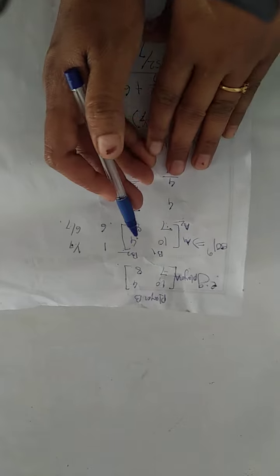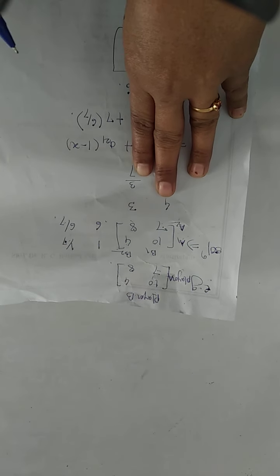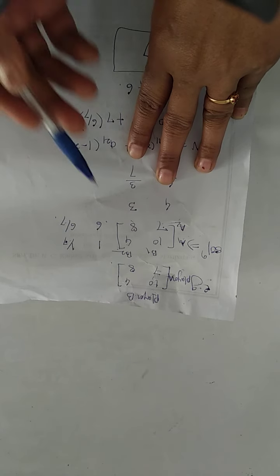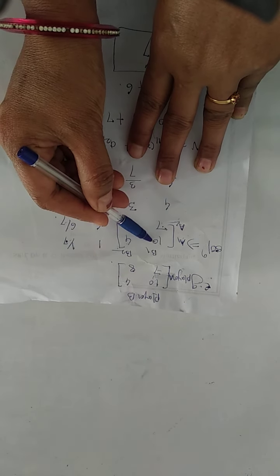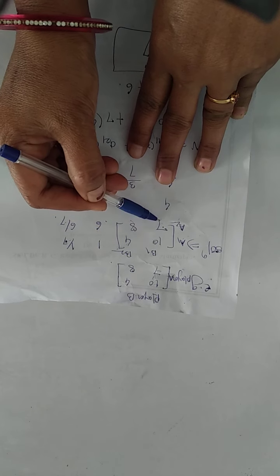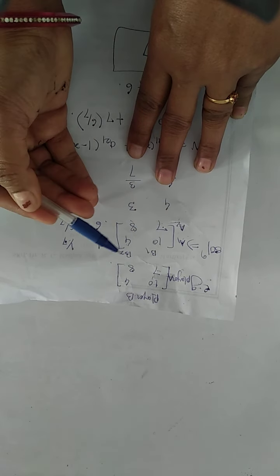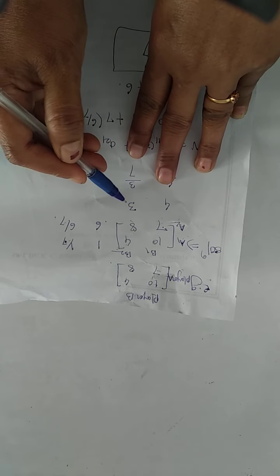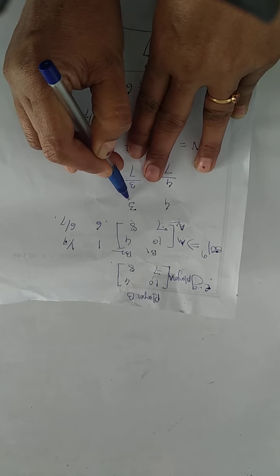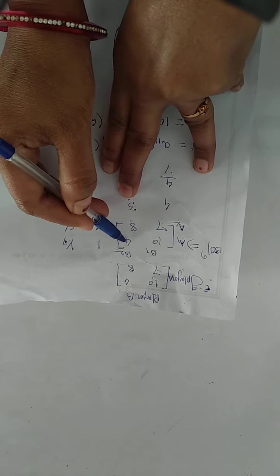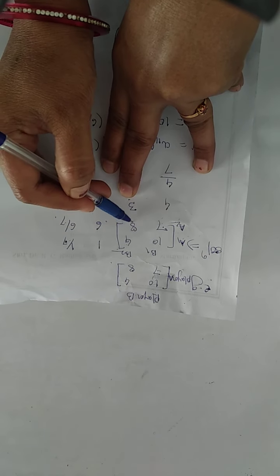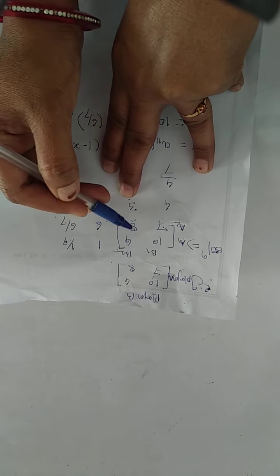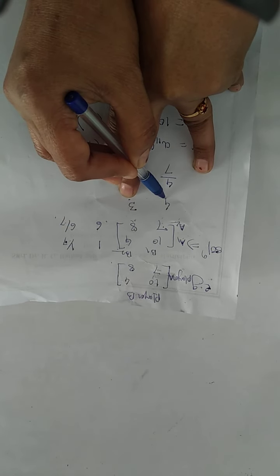The first step of the algorithm is to find the difference between the first column. The two elements are 10 and 7; the difference is 3, omitting the sign. Here the sign is positive, so write this difference into the second column — write 3. Then for the second column, the elements are 4 and 2; the difference is minus 4 — omitting the sign, write 4 in the first column.